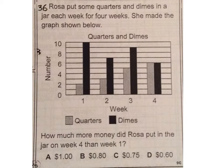Number 36. Rosa put some quarters and dimes in a jar each week for four weeks. She made the graph shown below. Quarters and dimes is my title. The number, I'm noticing it's counting by twos, is on the y-axis. The week is on my x-axis. Quarters is light gray. Dimes is dark black. How much more money did Rosa put in the jar on week four than week one?